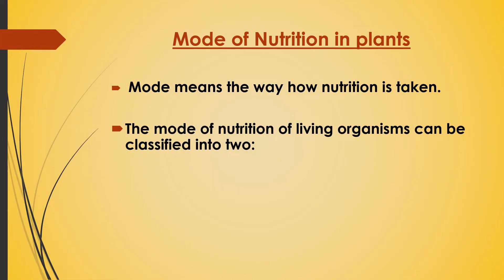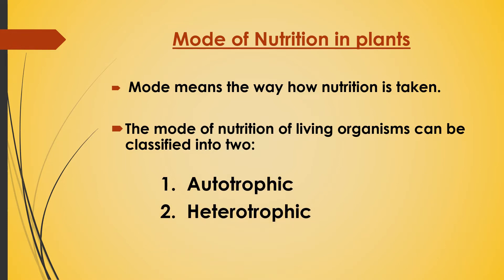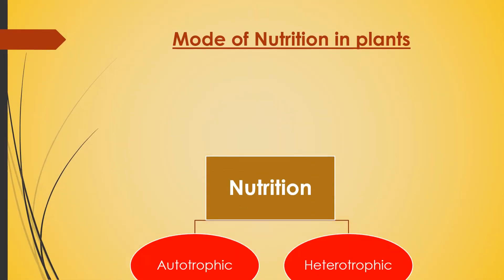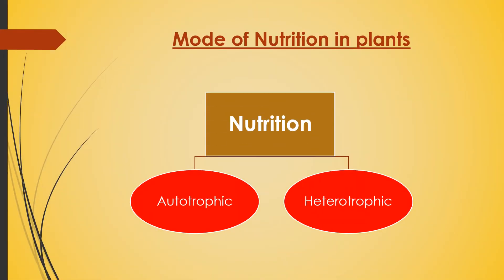Mode of nutrition in plants. Mode means the way — how nutrition is taken, the act of how nutrition is taken. There are two modes of nutrition in plants: autotrophic nutrition and heterotrophic nutrition.